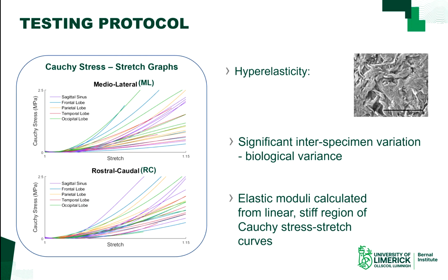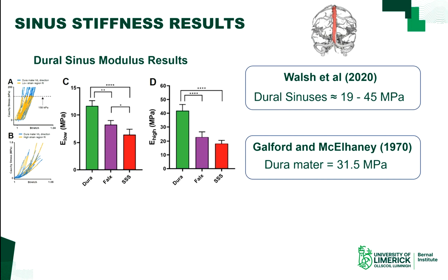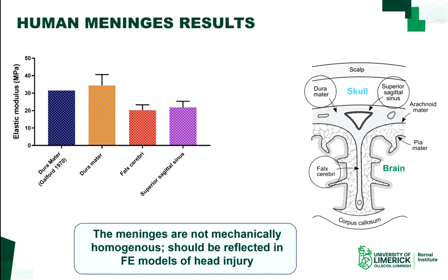We got the following data, and you are seeing the elastic moduli for each region. You can see the dura mater being statistically significantly stiffer in comparison to the falx and superior sagittal sinus. Comparing it to the Galford study from 1970, there are similarities; however, the falx and sagittal sinus are much lower.